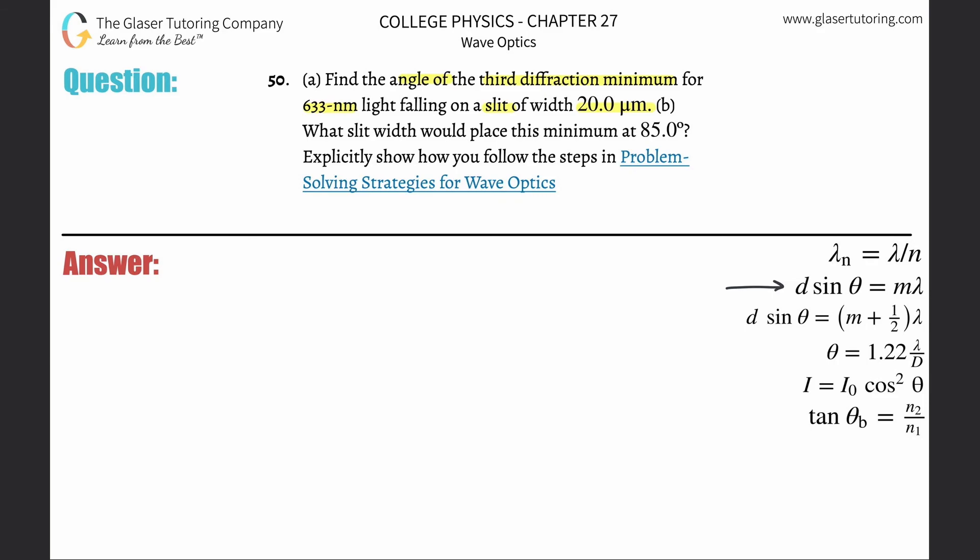Let's write down what we know. The d is the separation, so that is 20 micrometers. We just have to take that and convert that into meters, so multiply that by 10 to the minus 6. Sine of theta, that angle is what we're finding.